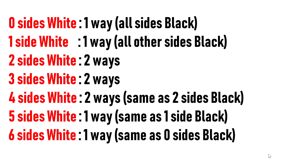A simpler way to look at it: zero sides white is possible in one way — all sides will be black. One side white is possible in one way — all other sides will be black apart from one side. Two sides white is possible in two ways — one way with adjacent sides white and one way with opposite sides white. Three sides white is possible in two ways — one way with three white sides sharing the same corner, and the other way where opposite sides are white and one center side is white.